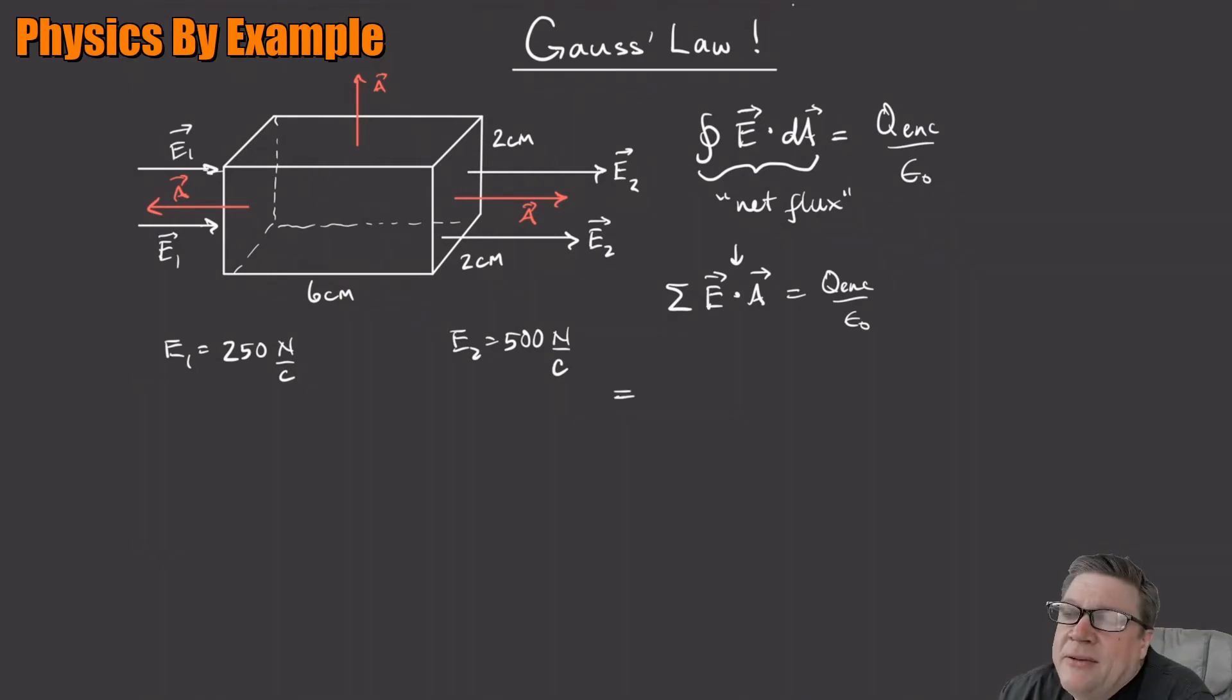What do I have for the left? For the left, my flux, what's the flux through the left-hand side of the box? It's going to be E dot A. So E dot A, E A cos theta, theta is 180 degrees, because E is going to the right, A is going to the left. So that's going to be E times A, so it's going to be 250.